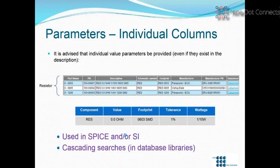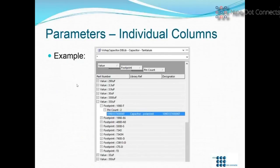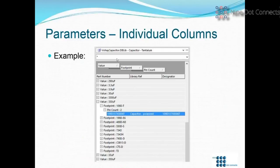To show the power of that: if you're using a database library — this doesn't work for symbol-centric libraries — you can take each of those columns and cascade them. You can start with a value, then break it down to a footprint, then even break it down to pin count if there are different pin counts. You can also split by through-hole versus surface mount, for example. So the more granular you make it, the more ways you can split and search the database, making it very easy to find a specific part among 5,000 components.